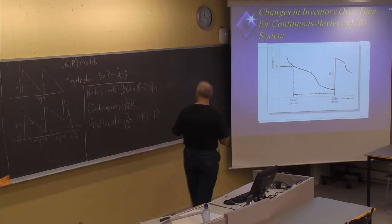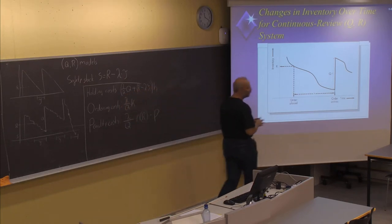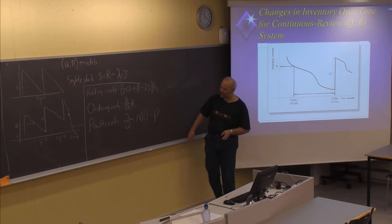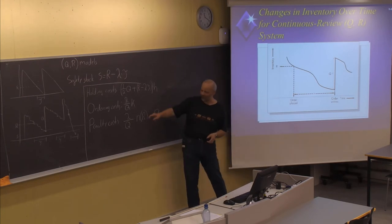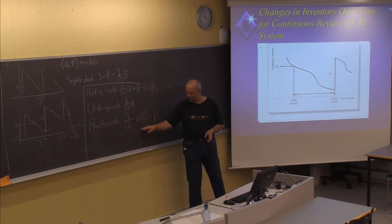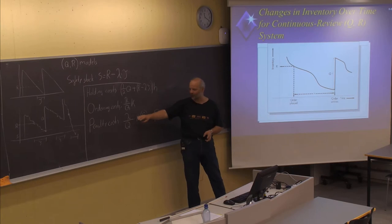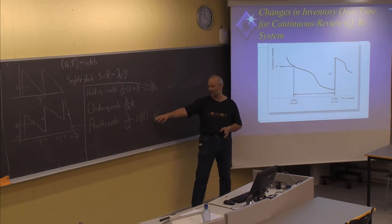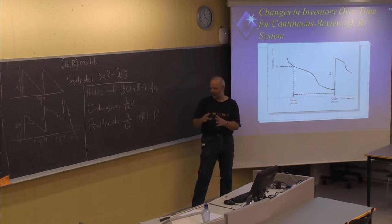To complete this part about the cost, what I mentioned 15 minutes ago was the size, or the expected number of units short, multiplied by the number of cycles. And to get the cost, you also need to multiply by P, which is the penalty cost per unit.